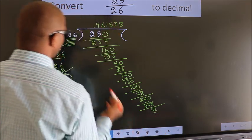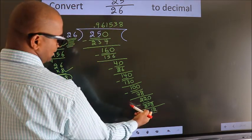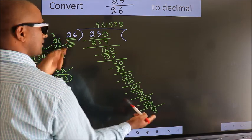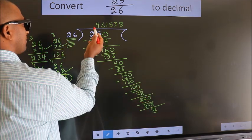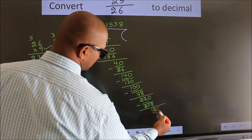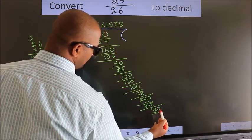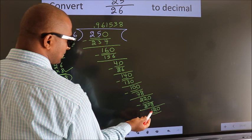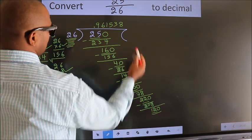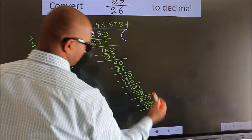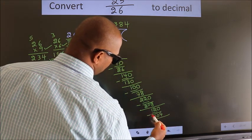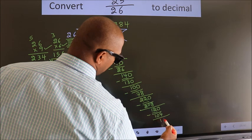Here we have 12, here 26. 12 is smaller than 26. We already have the decimal, so we can directly take 0. So 120. A number close to 120 in the 26 table is 26 fours, which is 104. Now we subtract. We get 16.